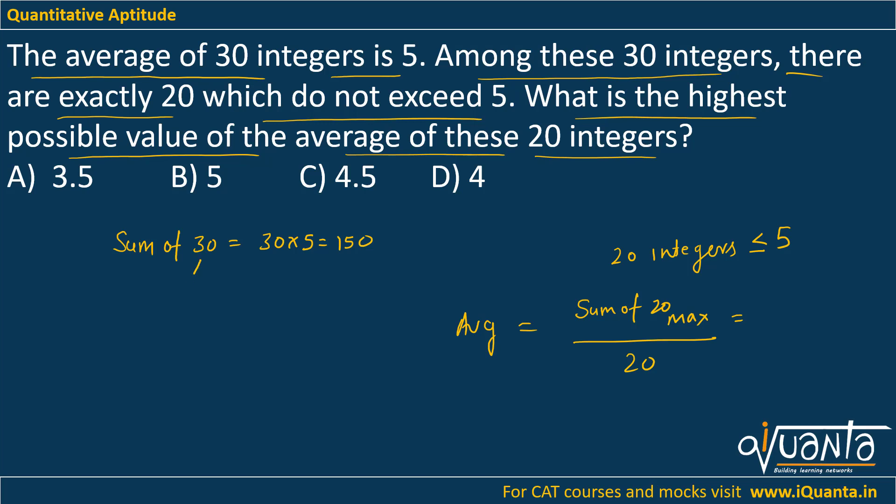Now out of these 30 integers, I know that 20 do not exceed 5, so 10 will exceed 5. I have to divide that total sum of 30 into 20 integers and 10 integers. I have to maximize the sum of 20 integers. Hence, I will try to minimize the sum of these 10 integers which exceed 5.